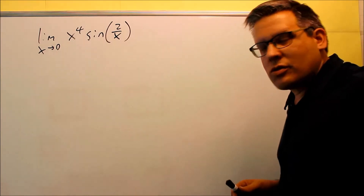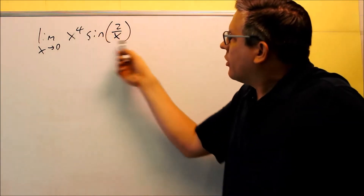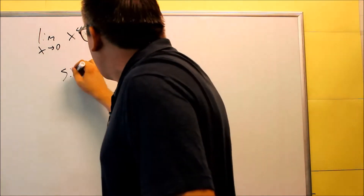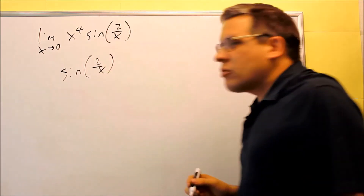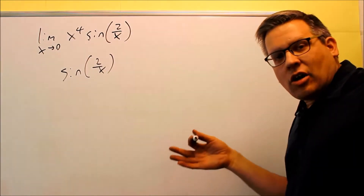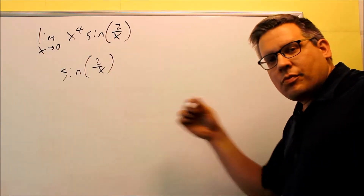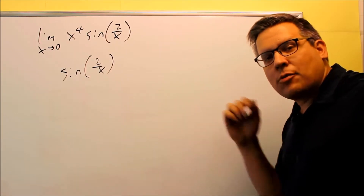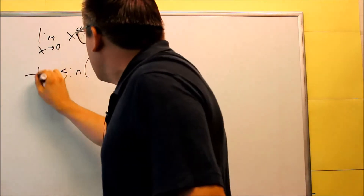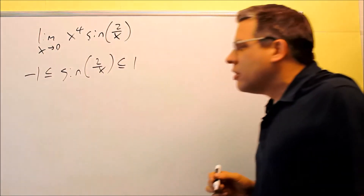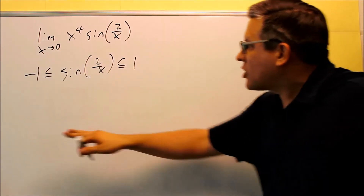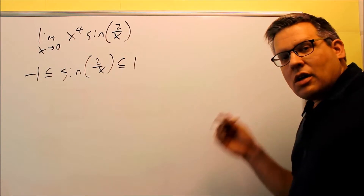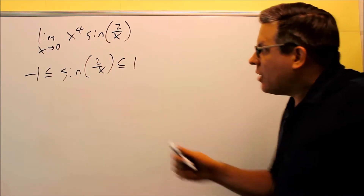We're going to do another one using the squeeze theorem. You want to start with the trig portion because we want to develop our first true statement. Just like cosine, sine also comes from the unit circle and takes values between negative one and one. So we can say that negative one is less than or equal to sine of (2/x), which is less than or equal to one. Next we're going to multiply by x to the fourth.